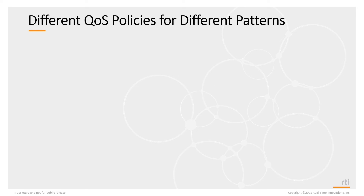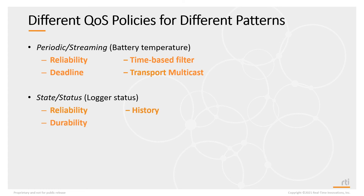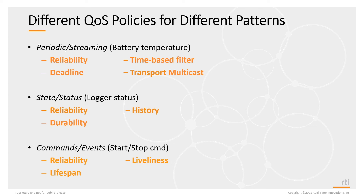Different QoS policies are needed for different communication patterns. For periodic or streaming data like battery temperature, you may adjust reliability, subsample using a time-based filter, send data using transport multicast, and set a deadline that tells DDS how often to expect the data. For state and status information like logger status, you may set reliability, keep historic information, and send data durably so that when applications get rebooted, they immediately get the current state of the system. Finally, commands and events may use the reliability, lifespan, and liveliness QoS policies.